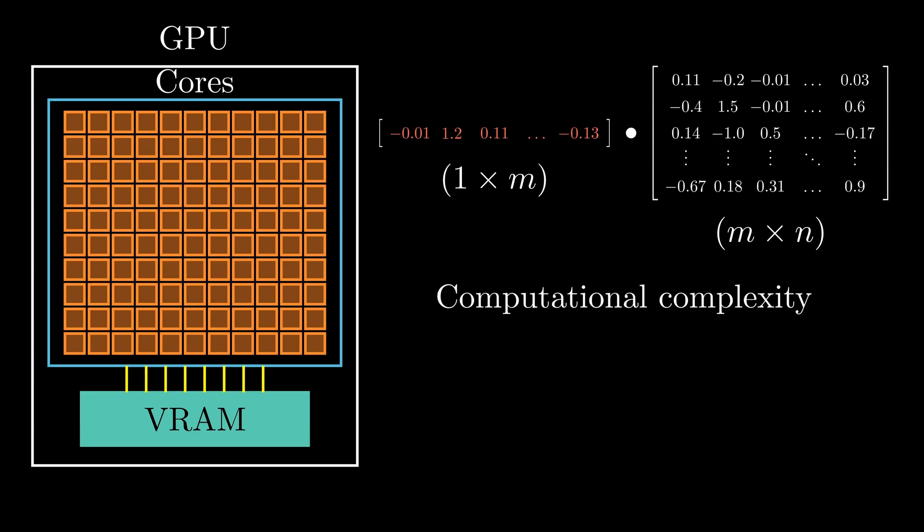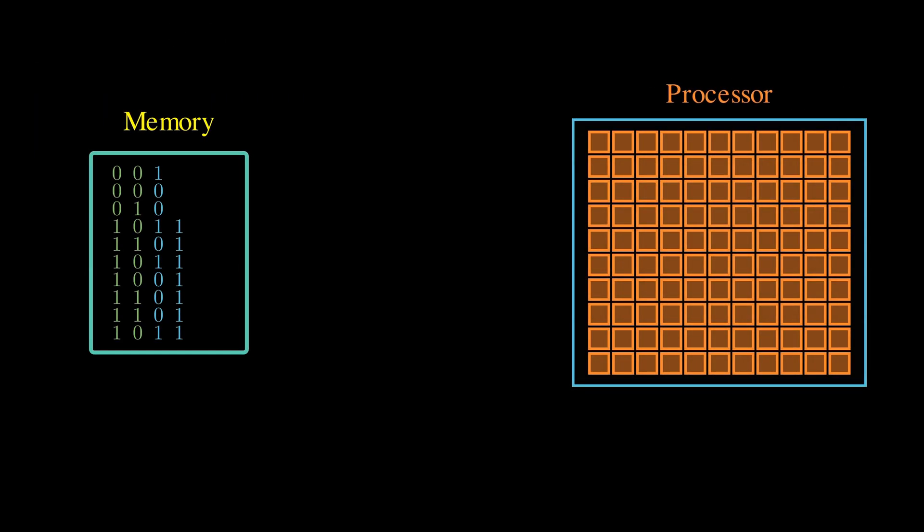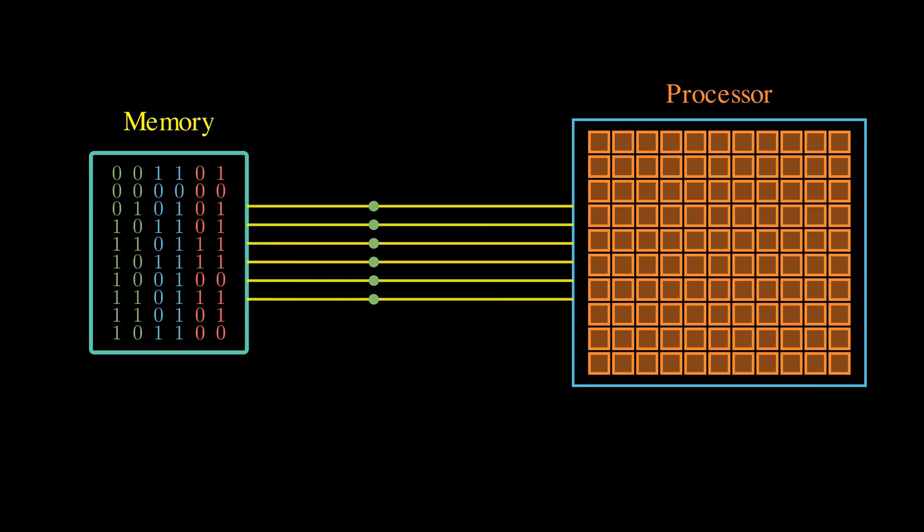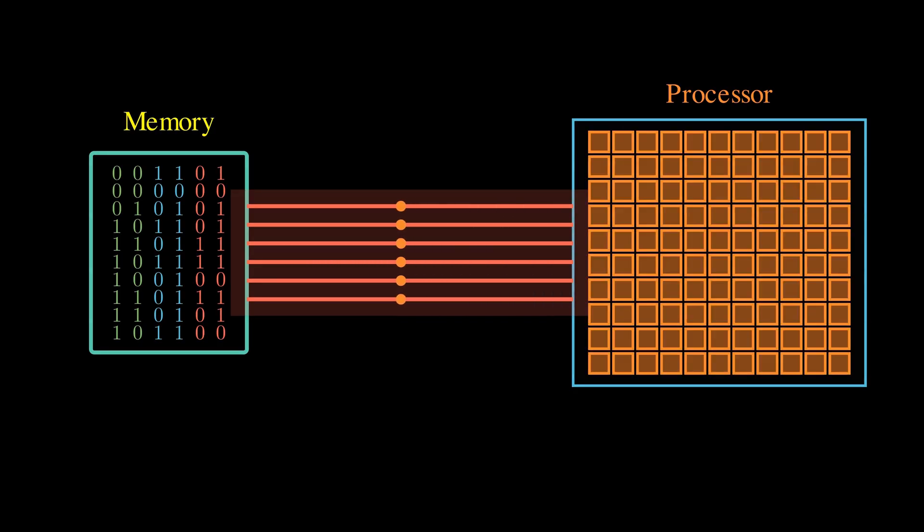Increases roughly in proportion to the number of elements or the size of the matrix. And here's the real catch: the weights live in memory, the inputs are pulled from memory, and the results must be written back to memory. That means every single computation step needs constant data movement back and forth between the processors and the memory.